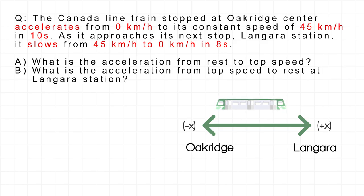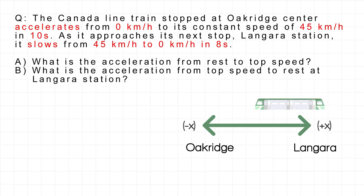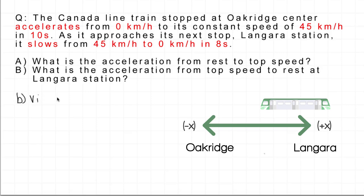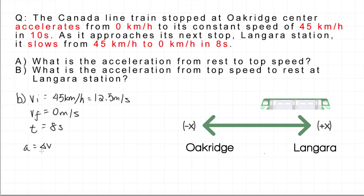In Part B, we can predict that the acceleration will be negative since it initially starts with a positive velocity and ends at rest, resulting in a negative change in velocity. Therefore, acceleration will also be negative since acceleration is in the same direction as the change in velocity. To solve for B, the initial velocity is 45 kilometers per hour, which equals 12.5 meters per second, and the final velocity is 0 meters per second. The time is equal to 8 seconds. Using the acceleration equation, we find that the acceleration is equal to negative 1.56 meters per second squared.